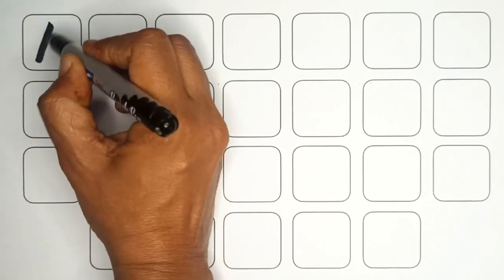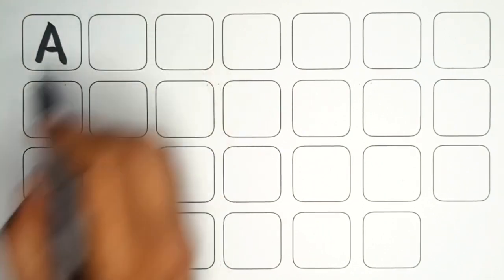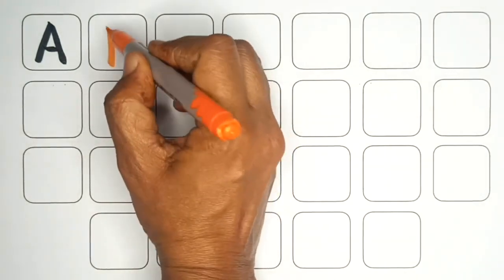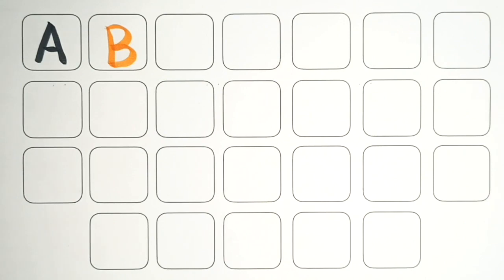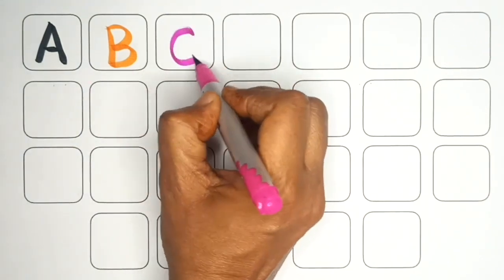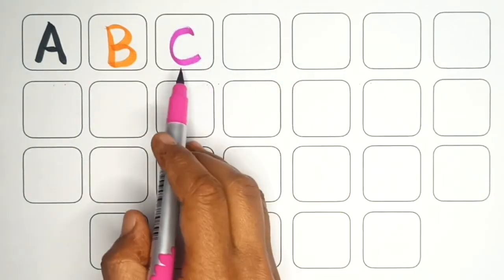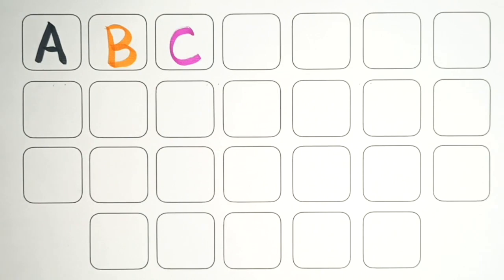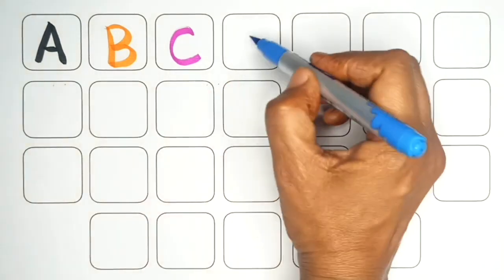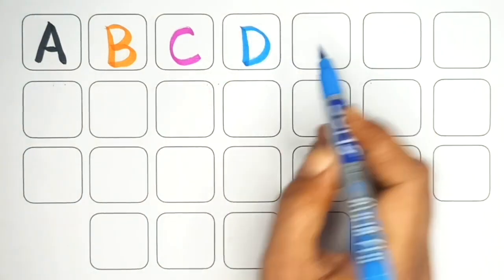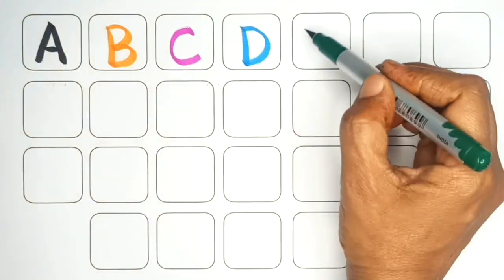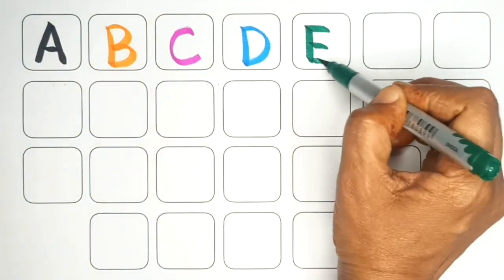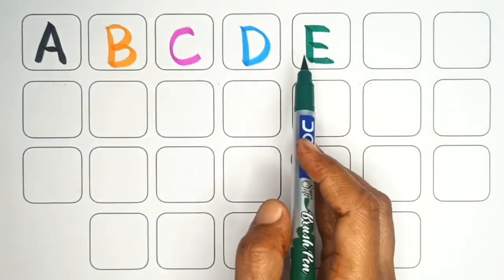A. A for apple. B. B for ball. C. C for cat. D. D for dog. E. E for elephant.